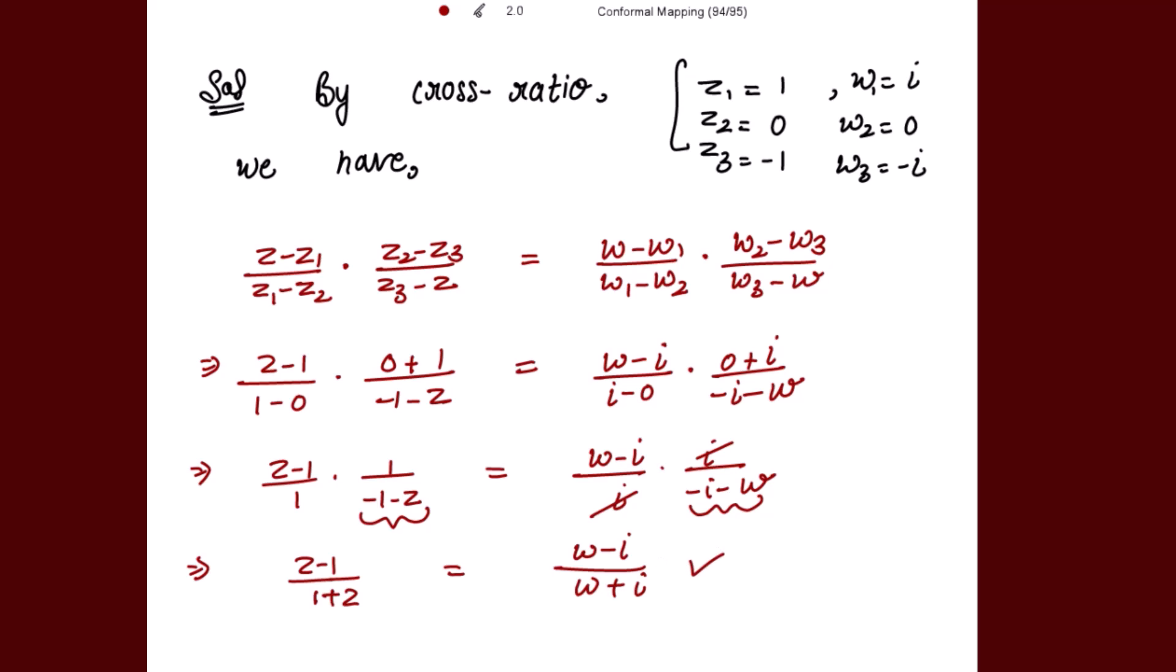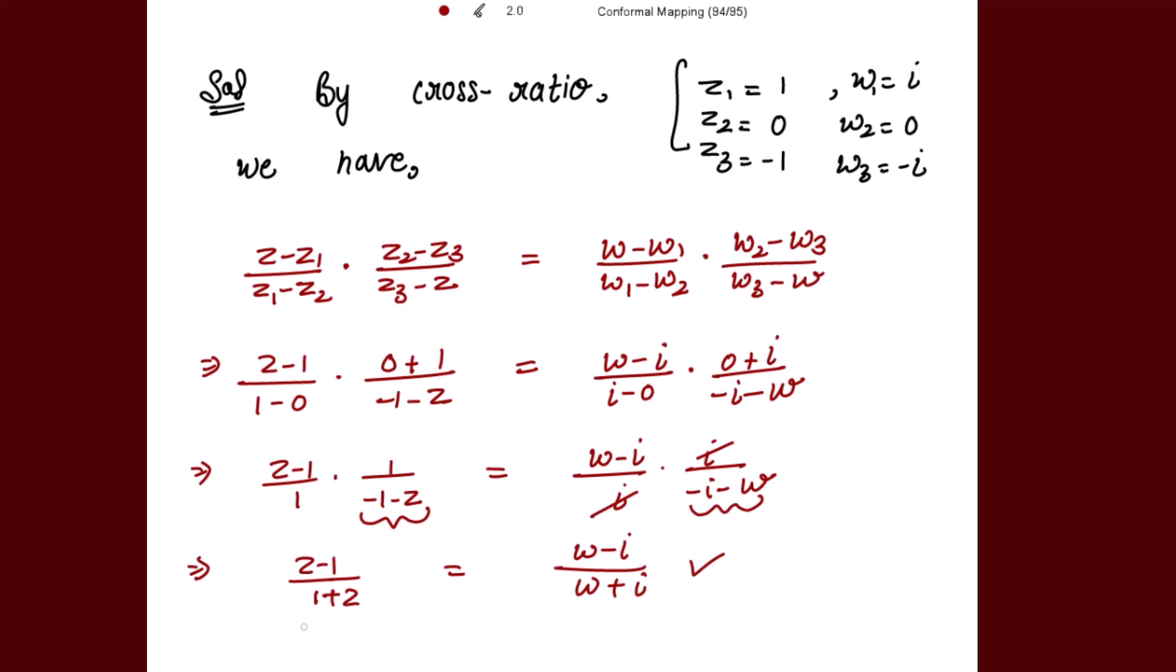Now I'm going to use the componendo and dividendo method. Adding numerator and denominator to get the numerator gives 2z. For the denominator, subtracting numerator and denominator gives z - 1 - 1 - z, which is -2.